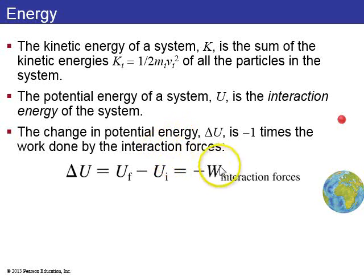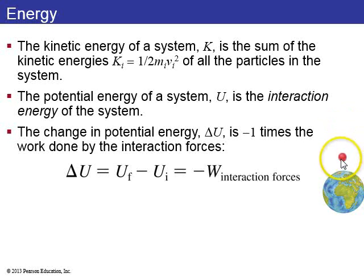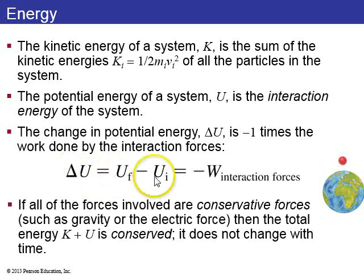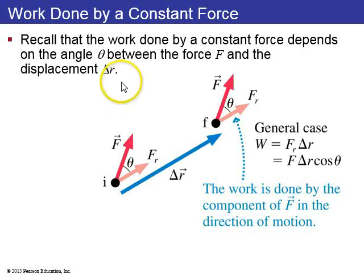Consider the system of the earth and a ball. The earth stays pretty stationary but the ball feels a downward interaction force of gravity, which accelerates it downwards. As gravity does positive work, the potential energy decreases. The ball speeds up and gains higher kinetic energy, so the sum of kinetic plus potential energy is conserved. We call gravity a conservative force for that reason.